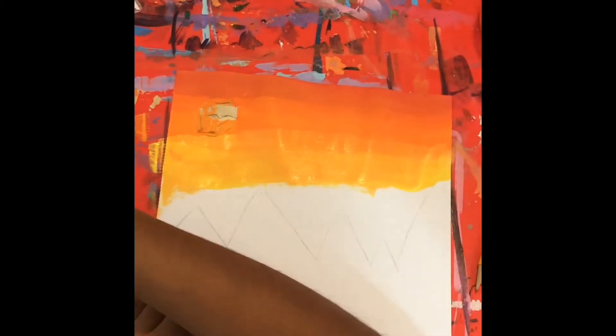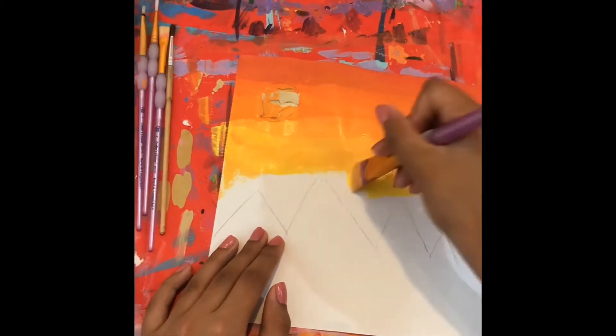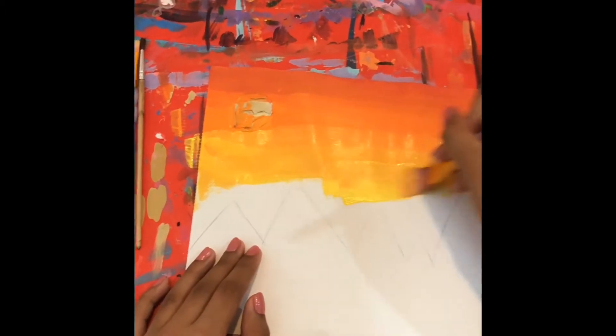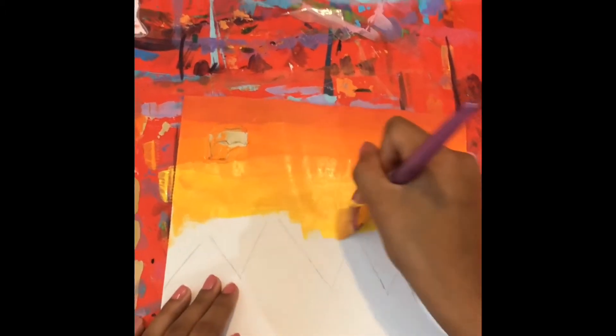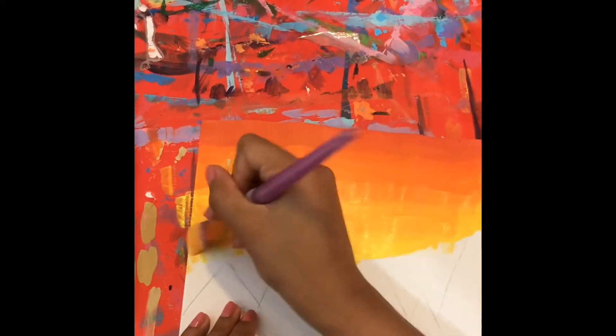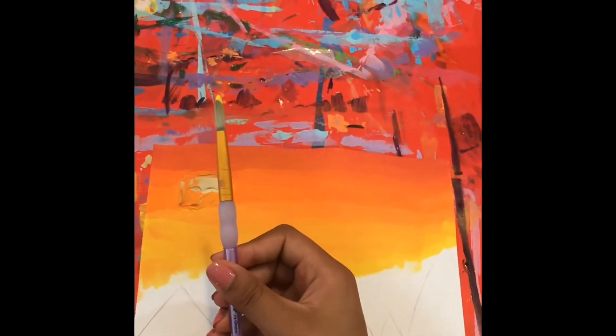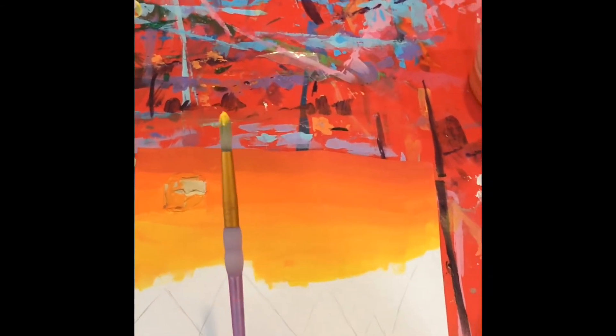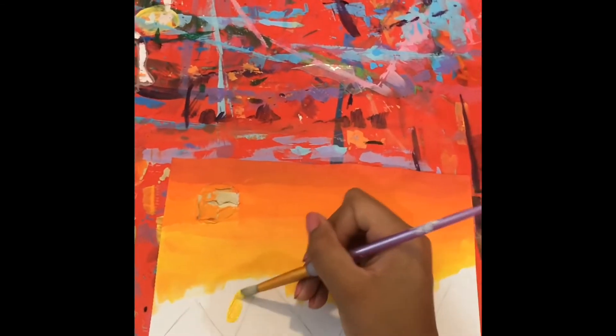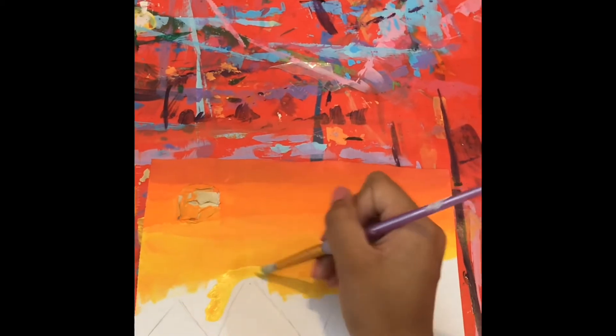You're going to go a bit more down so you don't go over the mountains. Go this low first and stop here. Now you want to take a rounded pointed medium brush. Dip your yellow in and go over around the mountains so you don't go over them.